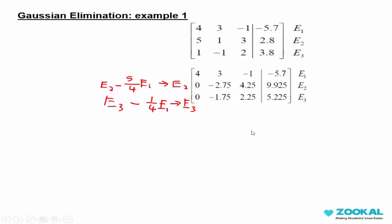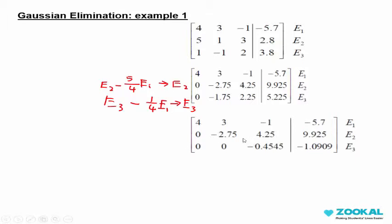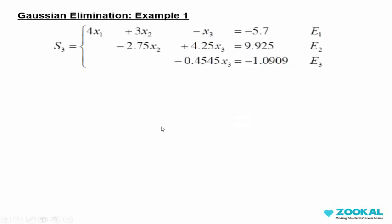We still have this element to reduce. In this round, we work with E3 minus a constant multiplied by E2. Because we have this element, we need to keep this element as 0, so we cannot subtract E3 with E1. Now that we get the reduced form, we can transform it into the corresponding linear system. So x3 we can directly get.